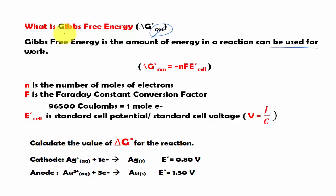So ΔG represents Gibbs energy. Notice the G right there. So what is it in the first place? It is the amount of energy in a reaction that can be used for work.